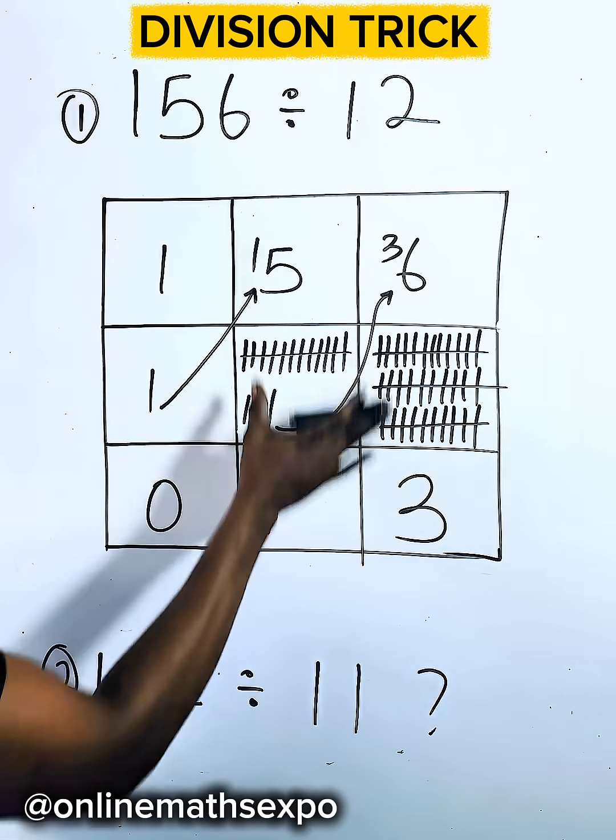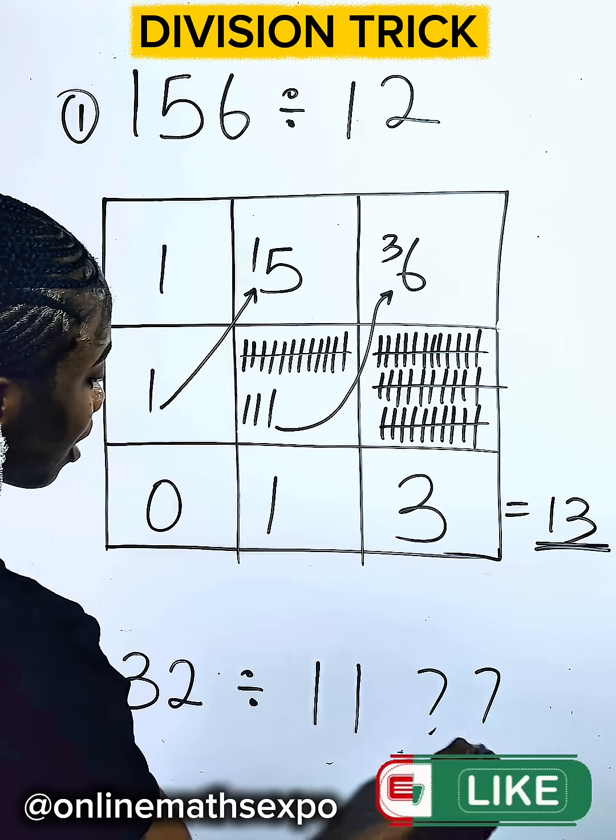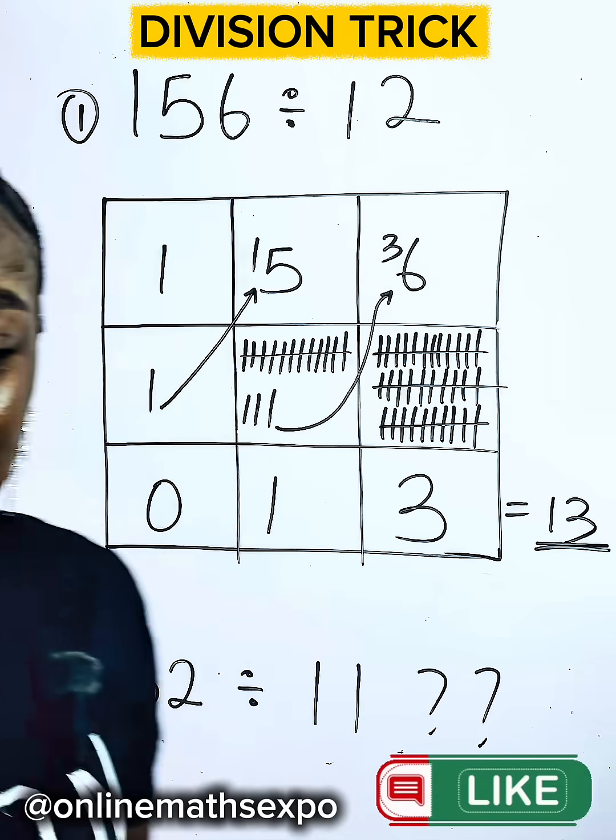So it means for dividing this, our quotient is 13. What do you think about this? I hope it helps you. Bye!